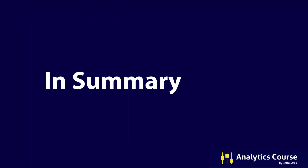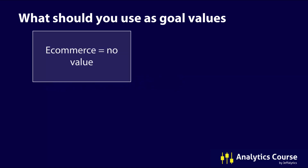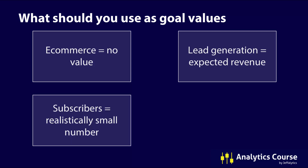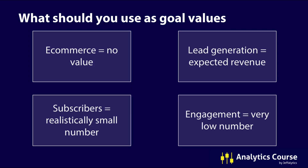To summarize: what should you use as goal values? If you have e-commerce, you don't need to put a value in there at all. If you have lead generation for your website — sales lead generation in particular — put the expected revenue for each lead that comes in. For subscribers like email subscribers or YouTube subscribers, use a realistically small number. For engagement, use a very low number, possibly even zero, because engagement really doesn't mean much. It's what we use when we have a lack of better numbers out there, but it's not great.